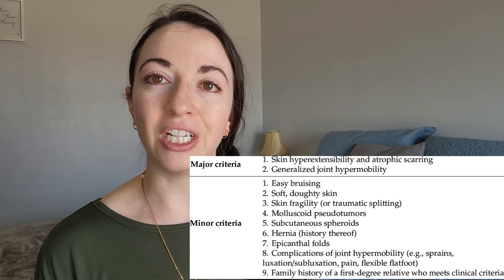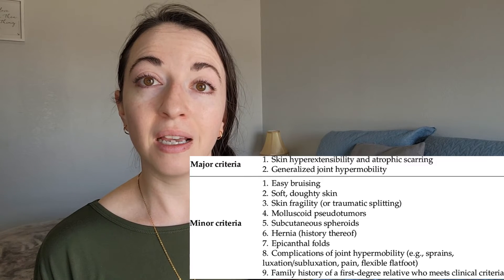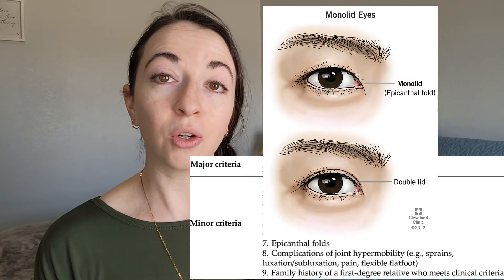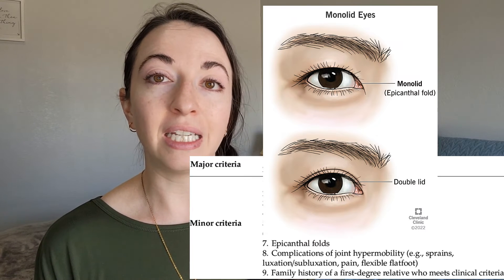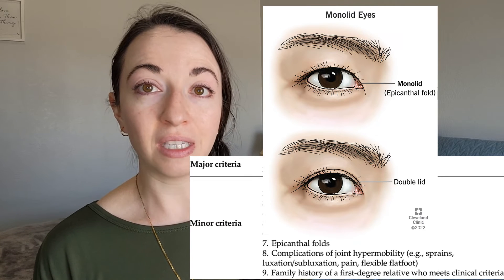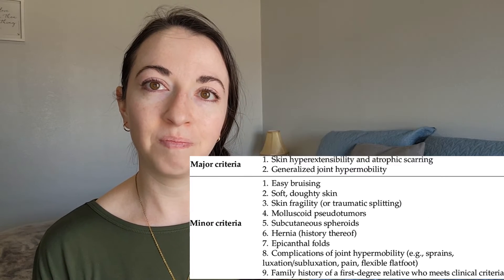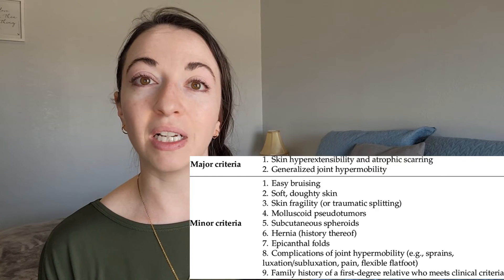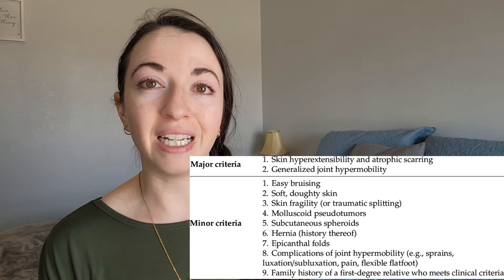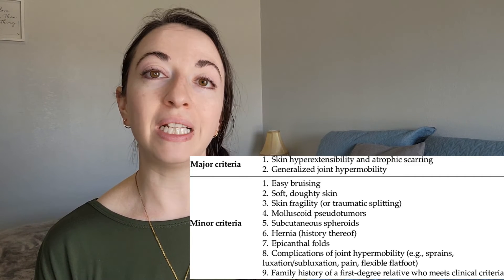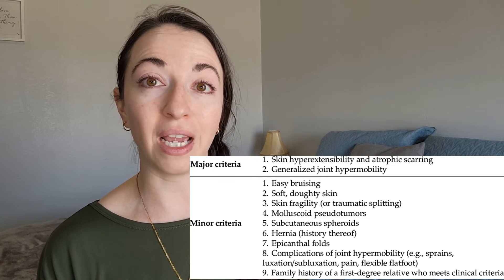Additional minor criteria include: hernias; epicanthal folds, a skin fold of the upper eyelid covering the inner corner of the eye, commonly seen in babies, toddlers, people of Asian descent, and Down syndrome, as well as classical EDS; complications of joint hypermobility such as sprains, dislocations, subluxations, pain, and flexible flatfoot; and family history of a first-degree relative who meets the classical EDS clinical criteria.